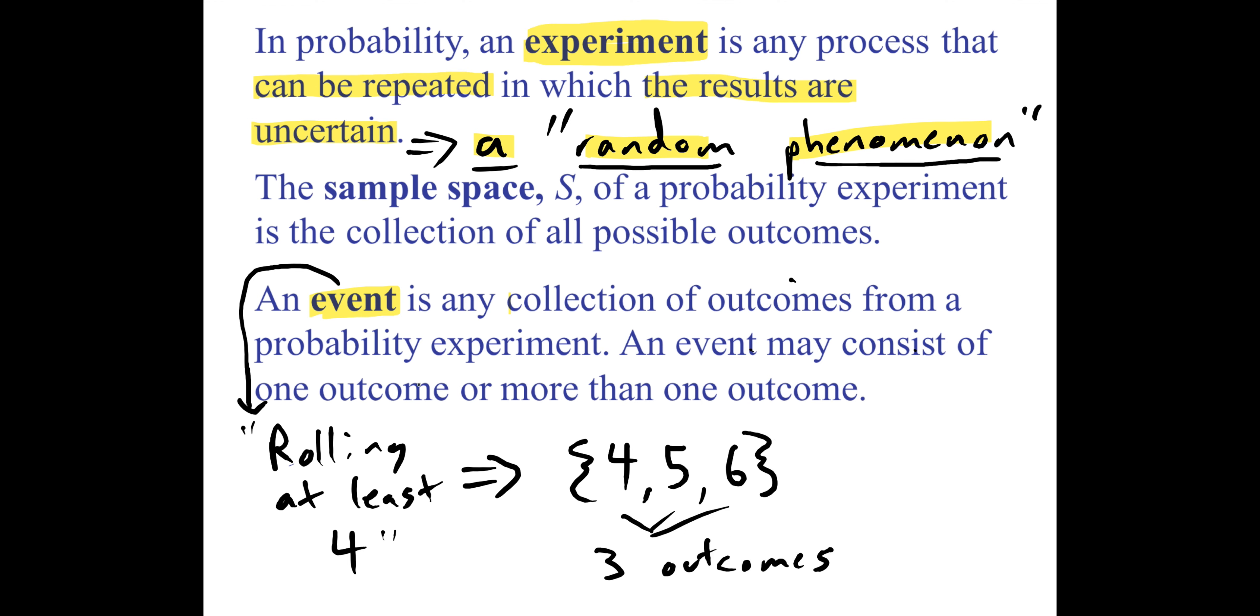It's not really important that you remember the word 'event' and the word 'outcome', but it is important that you realize some things like rolling at least a four can happen more than one way. If any of those three things happened, we would say that this event happened—that you rolled at least a four.